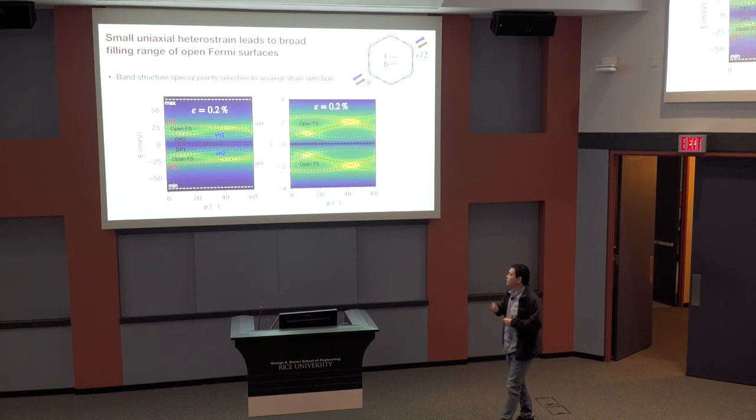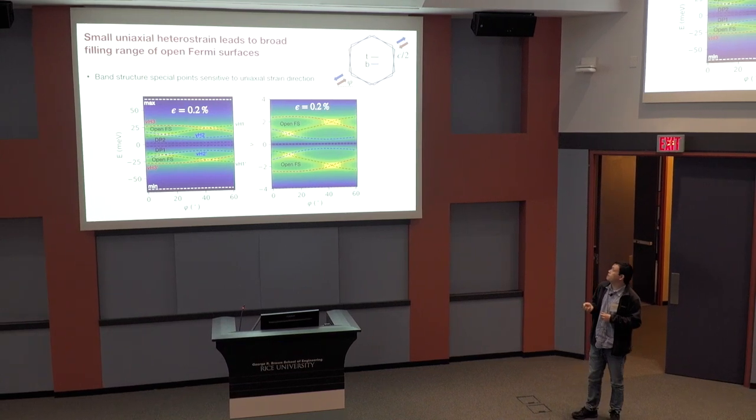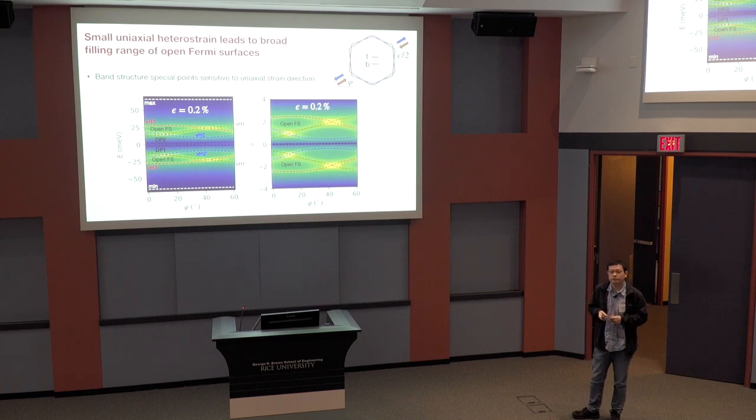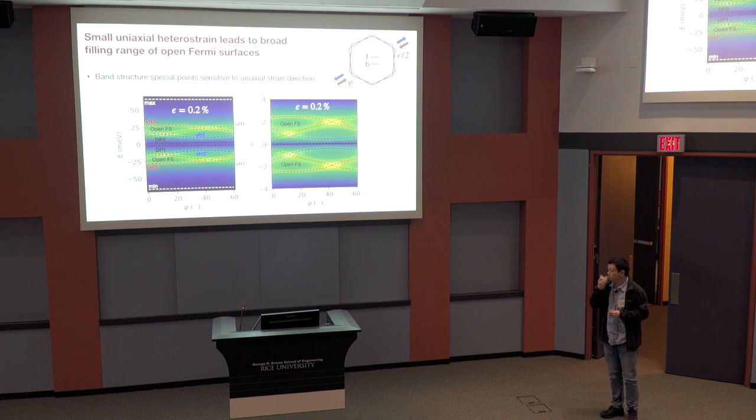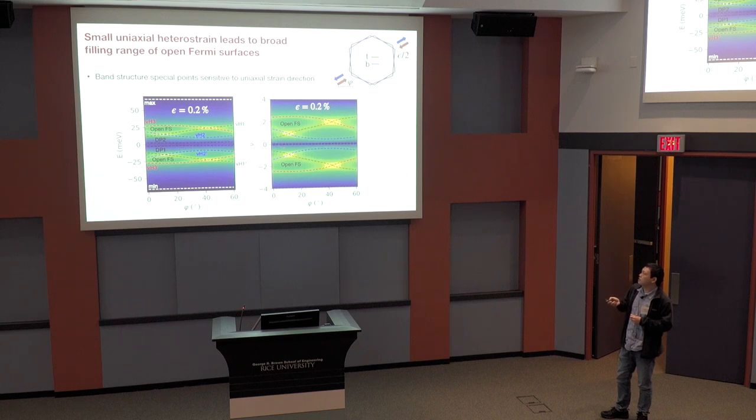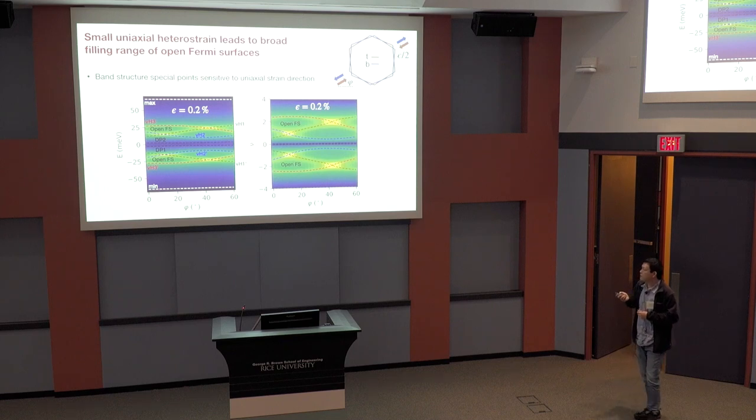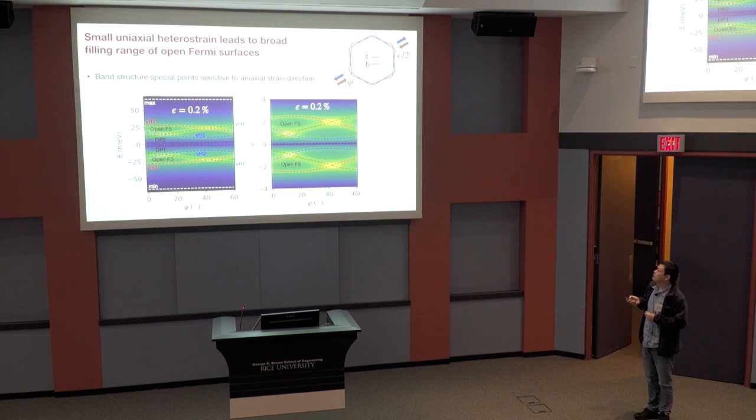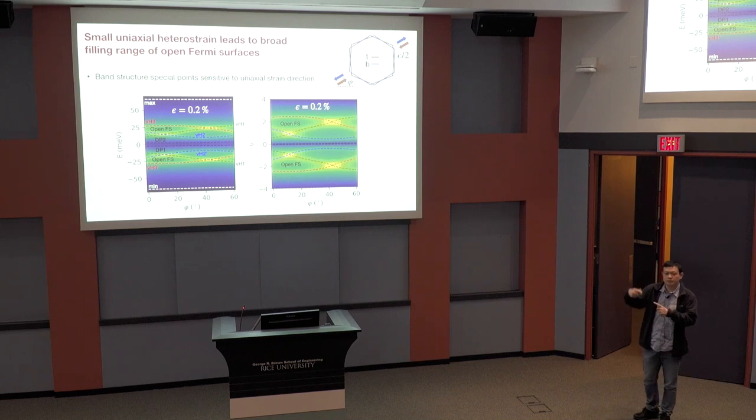So you can get various type of band structure behaviors simply for fixed heterostrain strength, but simply by rotating how the strain is applied relative to the underlying lattice. What I show over here is you can see that this is the density of states as a function of energy for different uniaxial strain directions. And this is converted as a function of filling, which I see you get this large open Fermi surface region that broadens and closes depending on really only depends on how it's oriented.